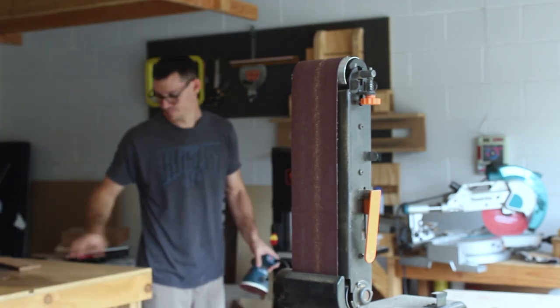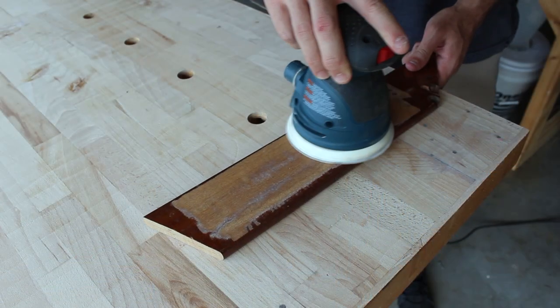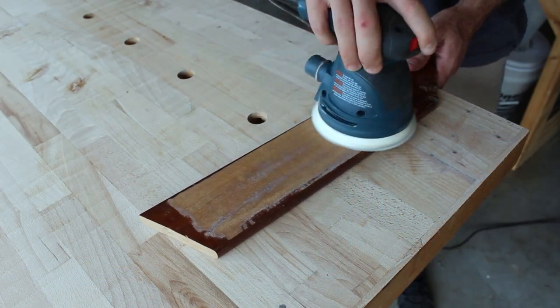As you can see, I started by removing the finish that had been previously put on the piece of mahogany using a belt sander and a palm sander.